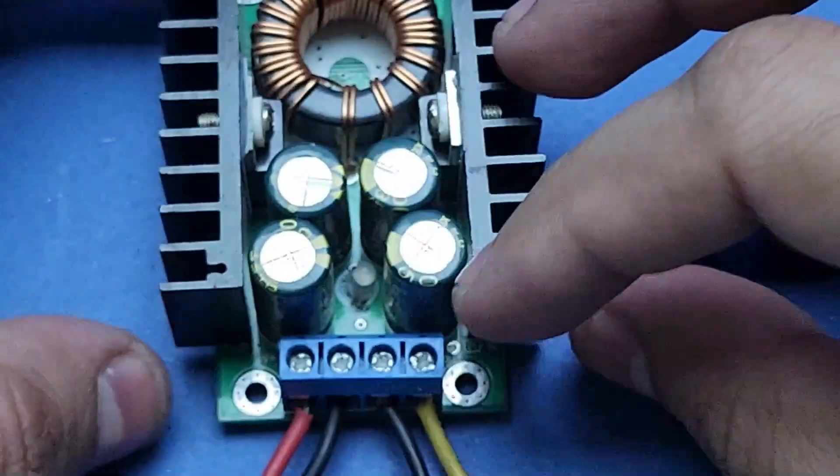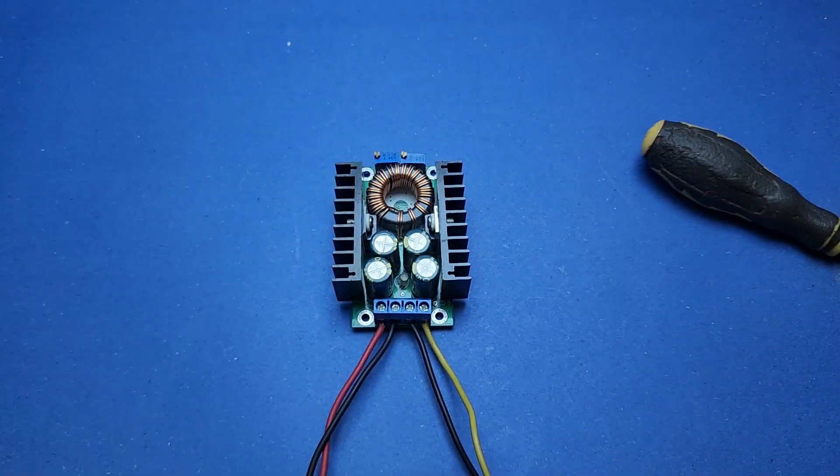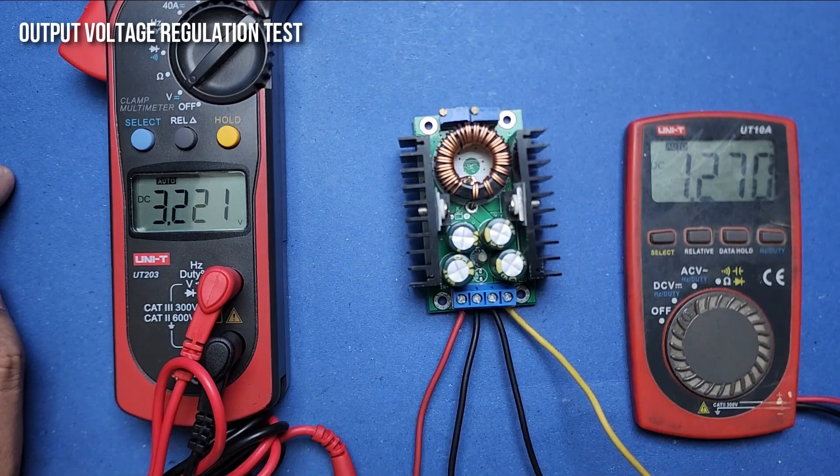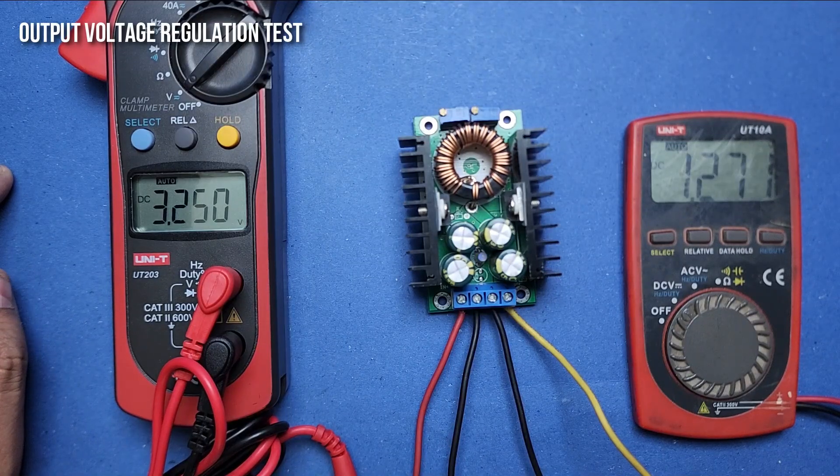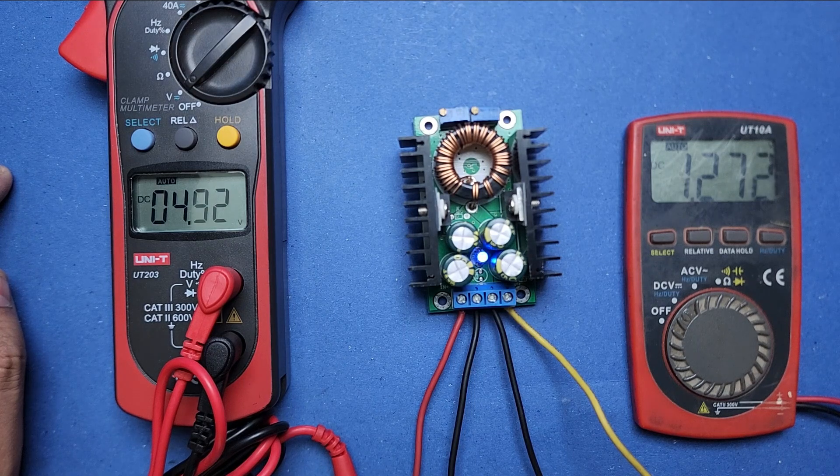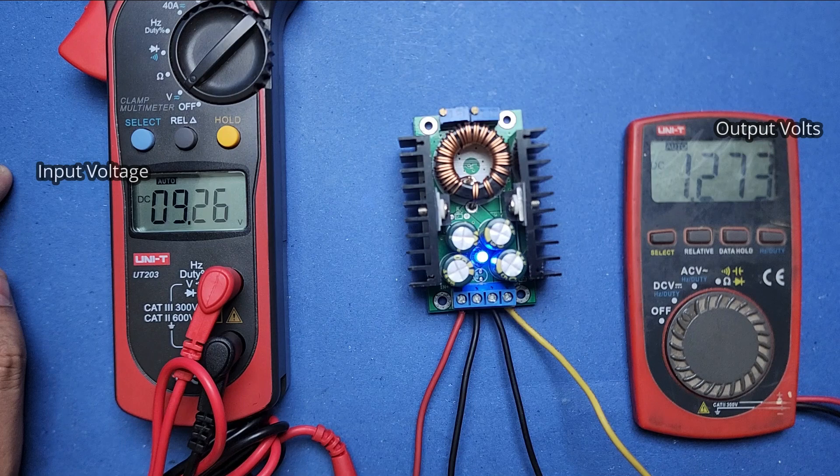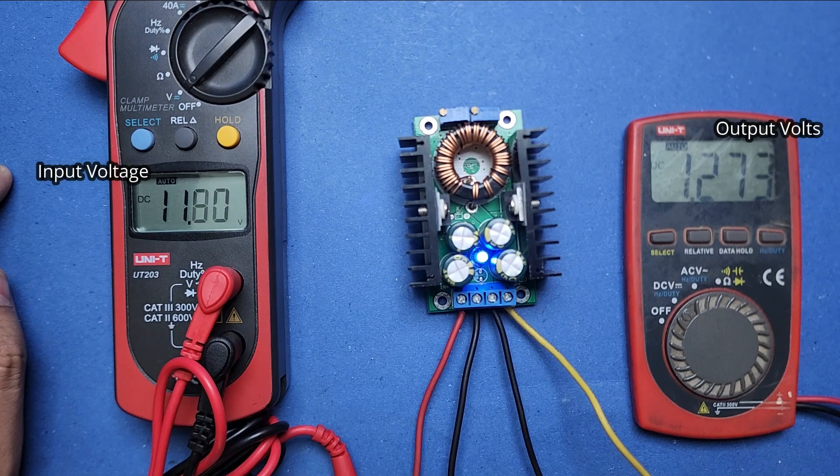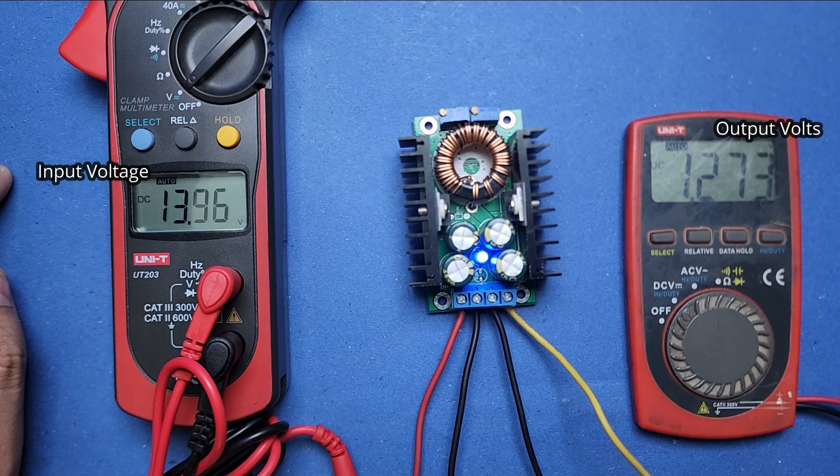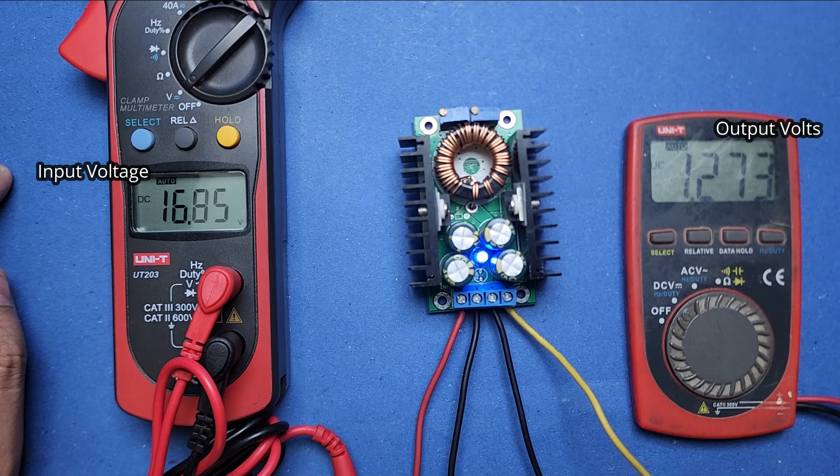Although we can give this module anywhere between 8 volts to 40 volts, the output volts are always less than the input volts. This means if I want to get 12 volt regulated output from this module, I will need to give it at least 15 to 16 volts to get a reliable 12 volt output.